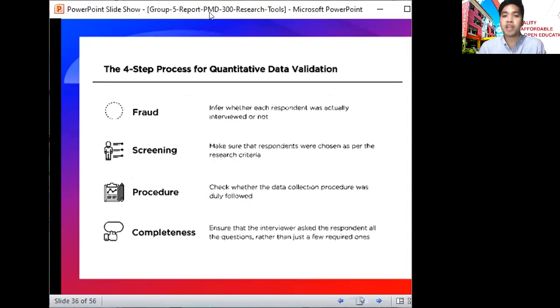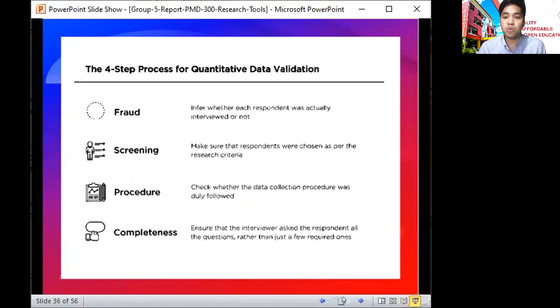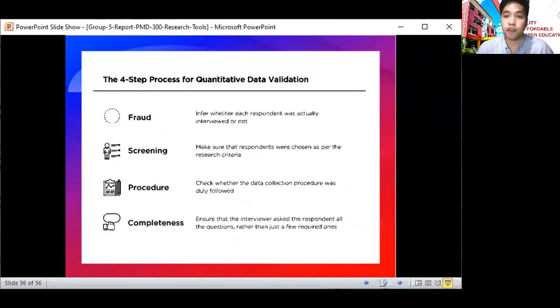There are four processes of how you process data validation. First is to check for fraud, to verify whether each respondent was actually interviewed or not. Next is screening, to make sure that respondents were chosen as per research criteria. Then procedure, to check whether the data collection procedure was duly followed. And finally, completeness, to ensure that interviewers asked the respondents all the questions rather than just a few required areas.